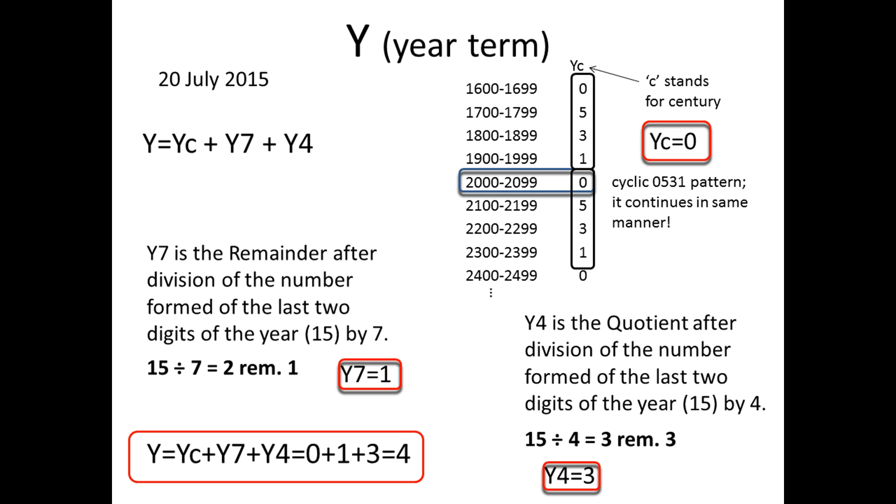For obtaining Y4, it is necessary to subtract multiples of 4, but instead of remembering how much you have left, you have to remember how many multiples of 4 you have subtracted. In other words, to obtain the quotient after division of the year by 4. For 2015 Y4 equals 3.